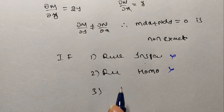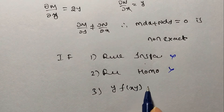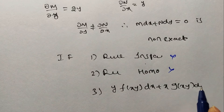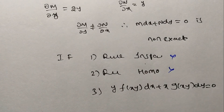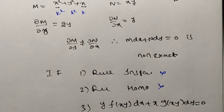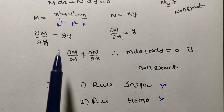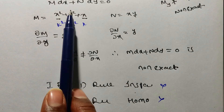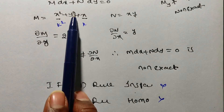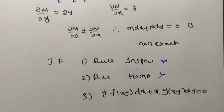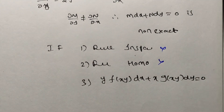Go for Rule 3. Rule 3 requires the equation to be in the form y·f(xy) dx + x·g(xy) dy = 0. Observe that from M, taking x as common or y as common does not give an xy term. So you cannot apply Rule 3 either.